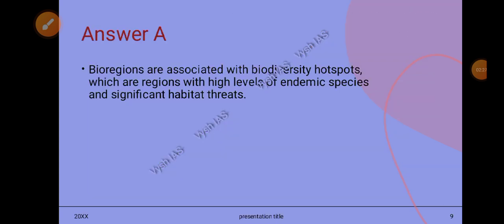The answer is A. Bioregions are associated with biodiversity hotspots. The term is self-explanatory. These are regions with high endemic species and significant habitat. There are criteria involved for a site to be considered a biodiversity hotspot, and I've covered that question in the environment lectures as well.